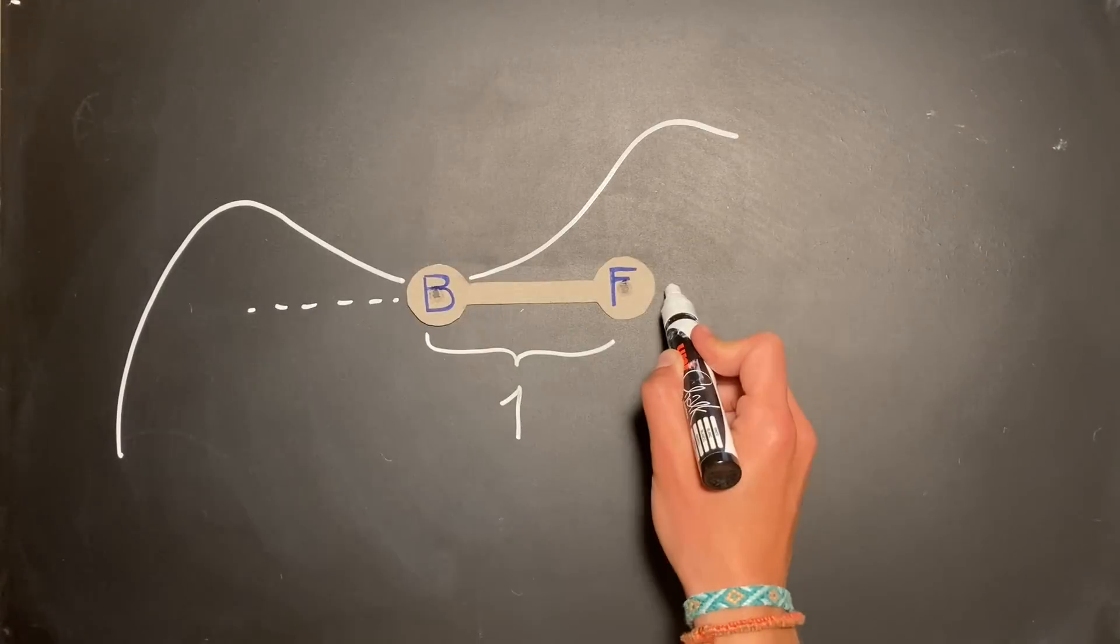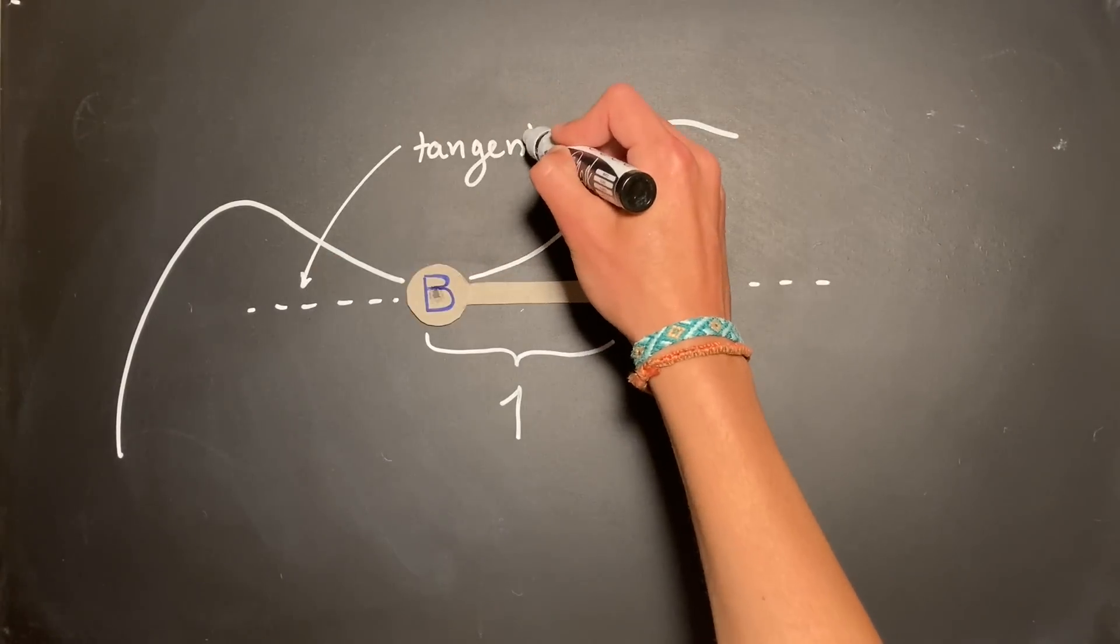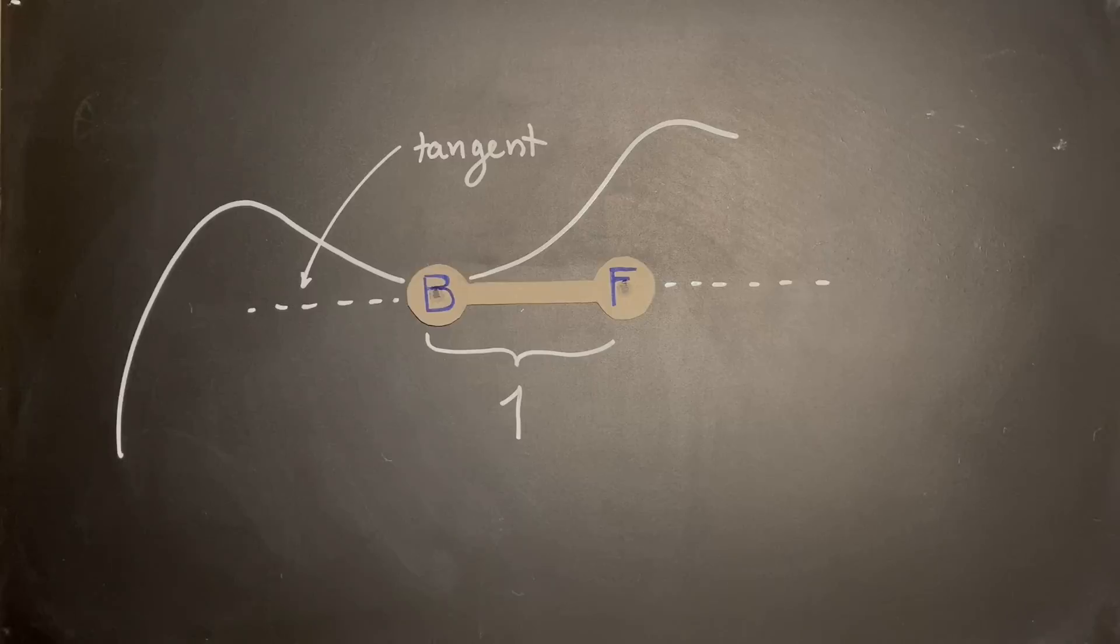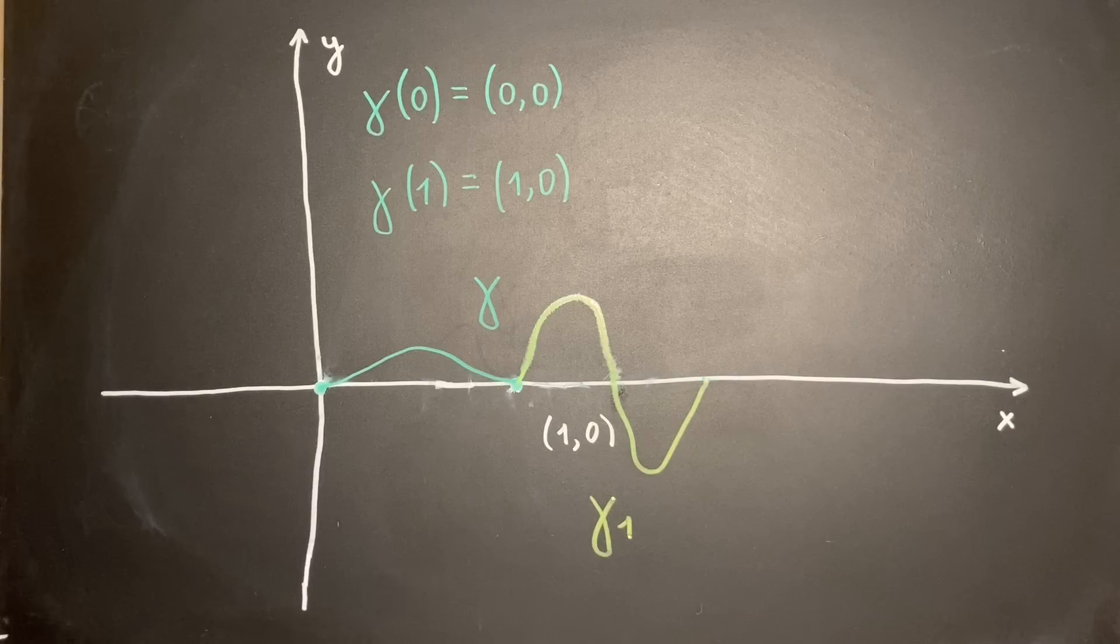Earlier, we established that segment FB is always tangent to the path of point B and the length of FB is constantly 1. Applying these rules, we can determine the location of F wherever B is on the seat curve.